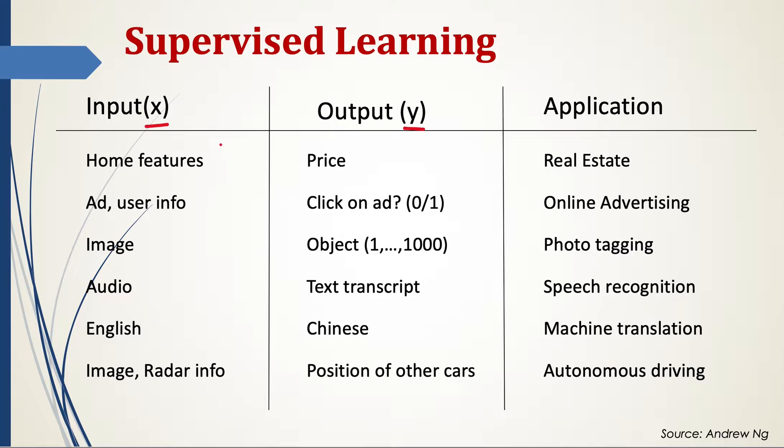So this home features will itself have a vector of different features. So we have one set of features and then the corresponding price, and then other values for those features and another price. So we have a one-to-one labeled data. And based on that, the neural network will learn to predict the price.